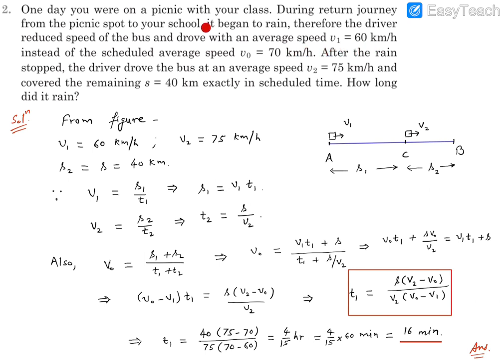with average speed v1 which is 60 km/h instead of the scheduled average speed v0 which is 70 km/h. After the rain stopped, the driver drove the bus at an average speed of v2 which is 75 km/h and